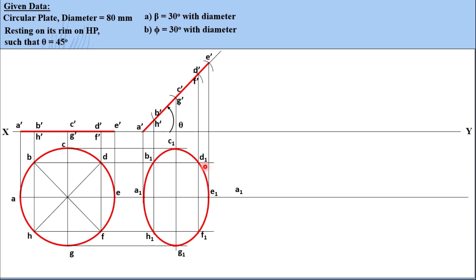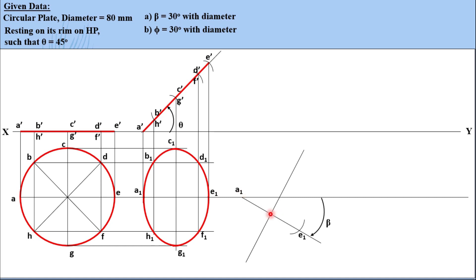Now we incline. For condition A, beta equals 30 degrees. We are talking about diameter AE which makes an angle of 45 degrees with HP. The top view of that same diameter, A1E1, must make 30 degrees with VP. Take A1, draw a line at beta equals 30 degrees, then take distance A1 to E1 in compass, keep compass at A1, and cut an arc naming it E1. Take the center line perpendicular to A1E1.